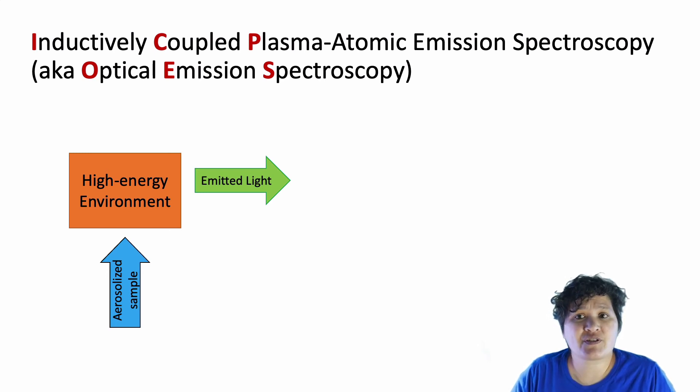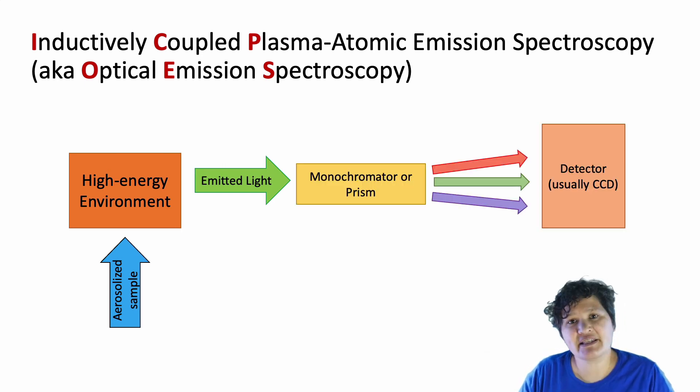So, here's the first obvious difference. The last instrument measured absorbance. Well, this one measures emission. Again, we have the monochrometer next, followed by a detector, which this time is a CCD. And the reason that it uses a CCD rather than a PMT is that that allows the instrument to collect many different wavelengths at once. But other than that, it does look very similar to what we saw in the AA.